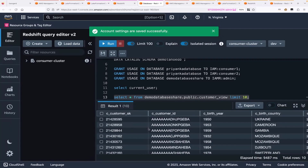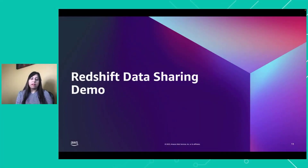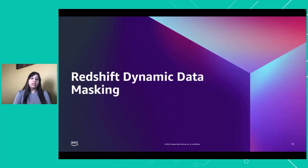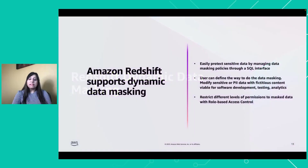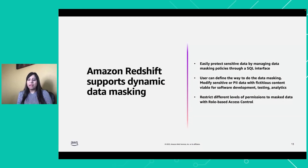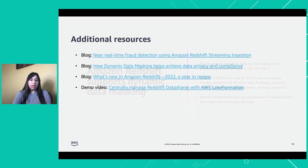Let's go back to the slides. Today we learned how we can share data from one account to another using the central data governance account. The last topic is Redshift dynamic data masking. This feature is still not GA but will be available soon. Amazon Redshift will support dynamic data masking so you can easily protect sensitive data by managing data masking through your SQL interface, mask or modify PII with fictitious content, and restrict different levels of permission using rule-based access control. Today we learned about all three features. There are more things coming with Redshift — keep learning. We have some additional resources you can refer to for everything presented today.